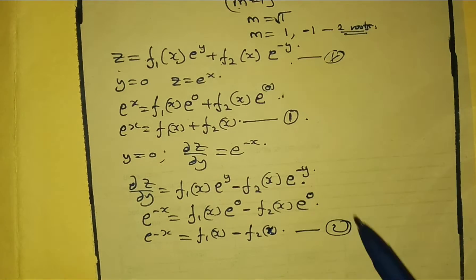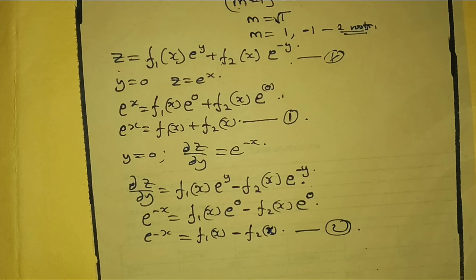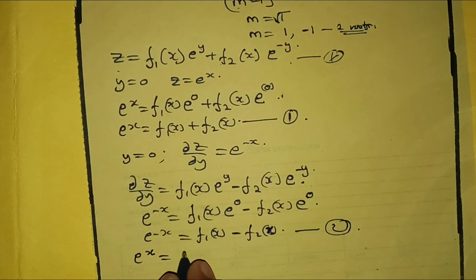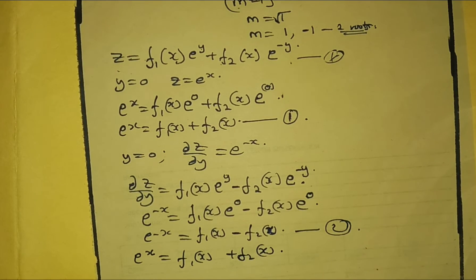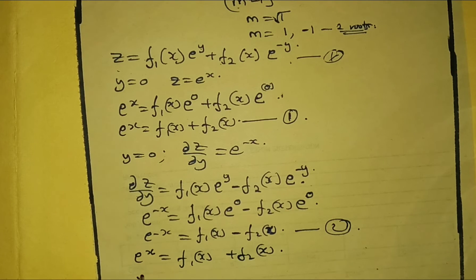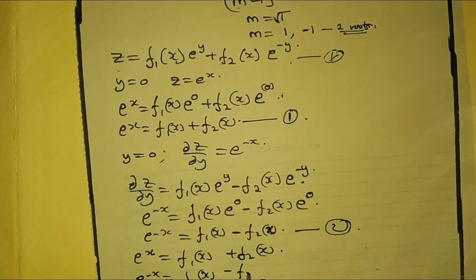We now solve these two equations simultaneously. Equation 1: e^x = f₁(x) + f₂(x). Equation 2: e^(−x) = f₁(x) − f₂(x).